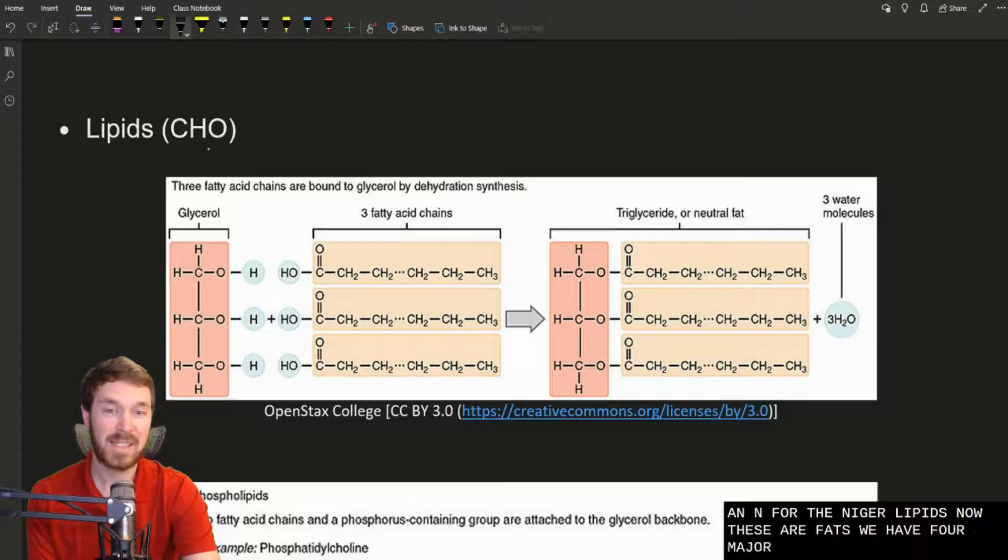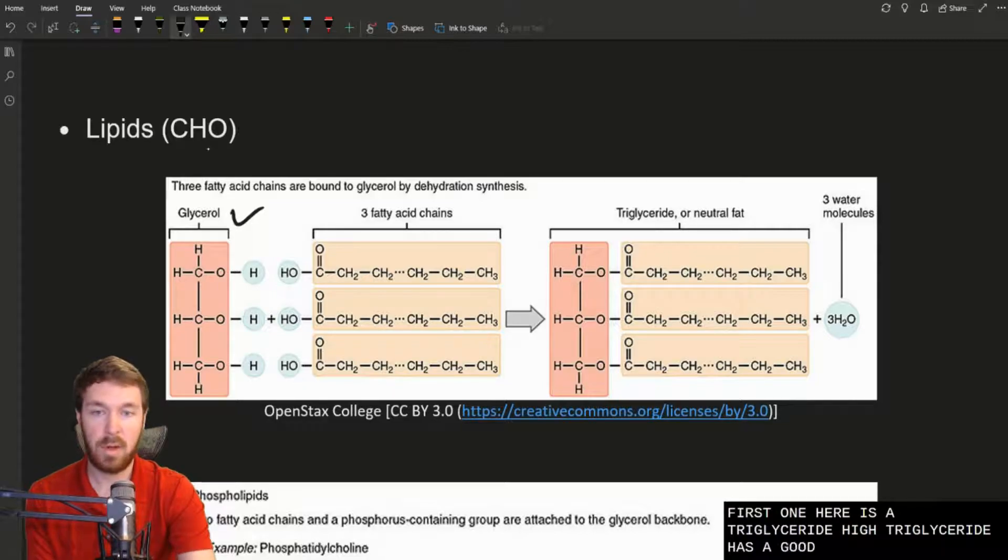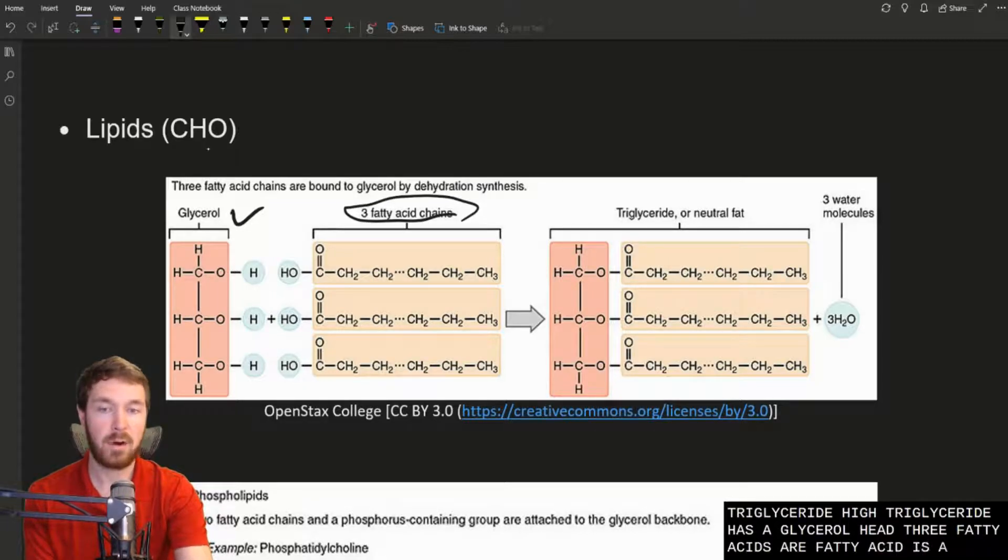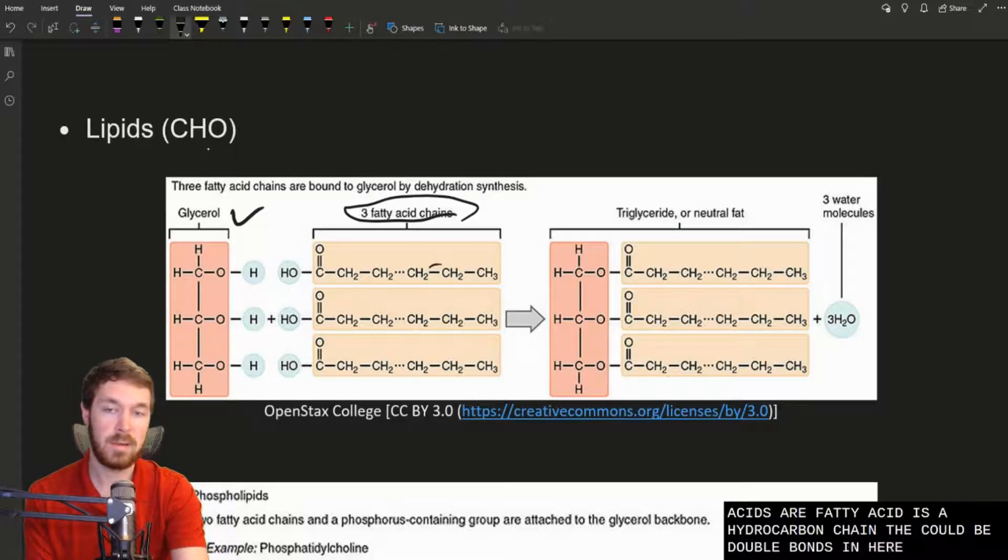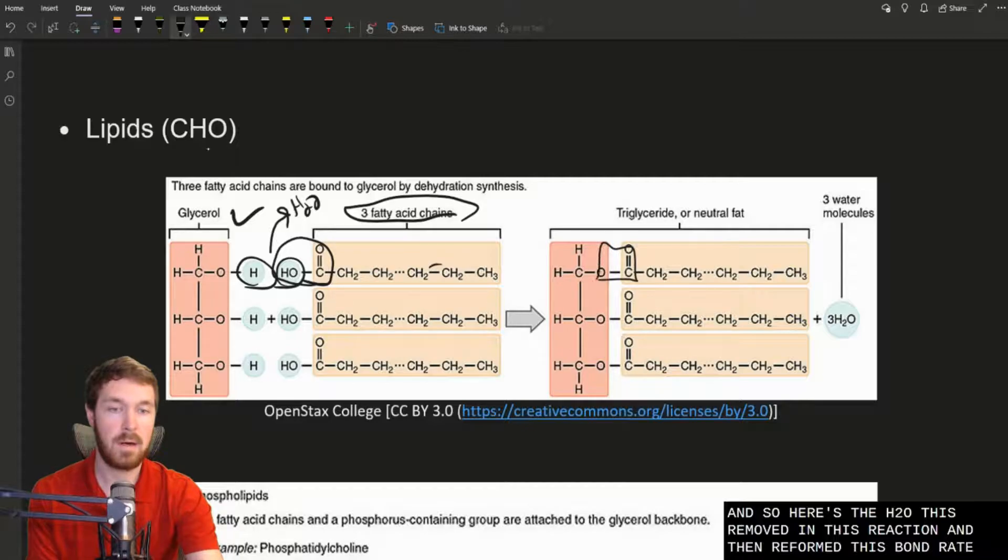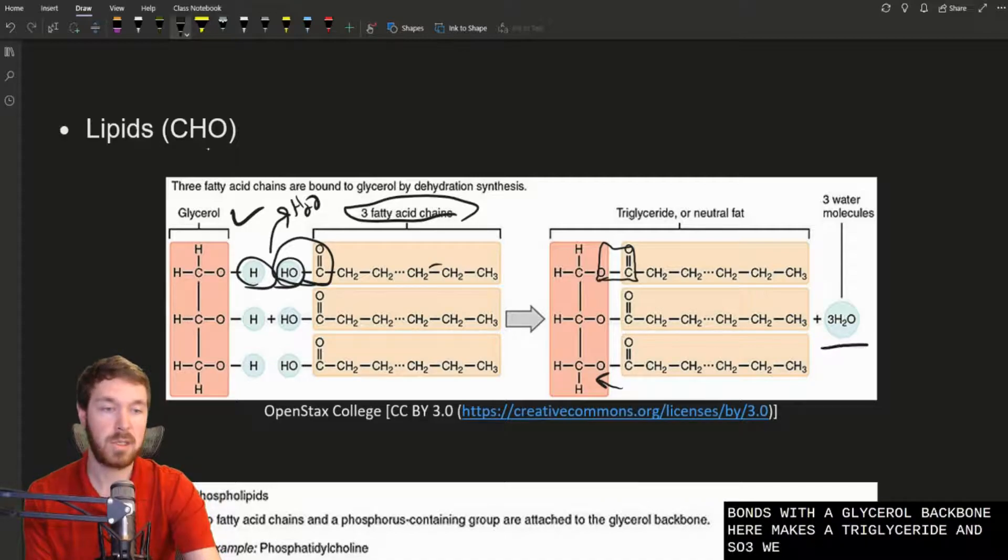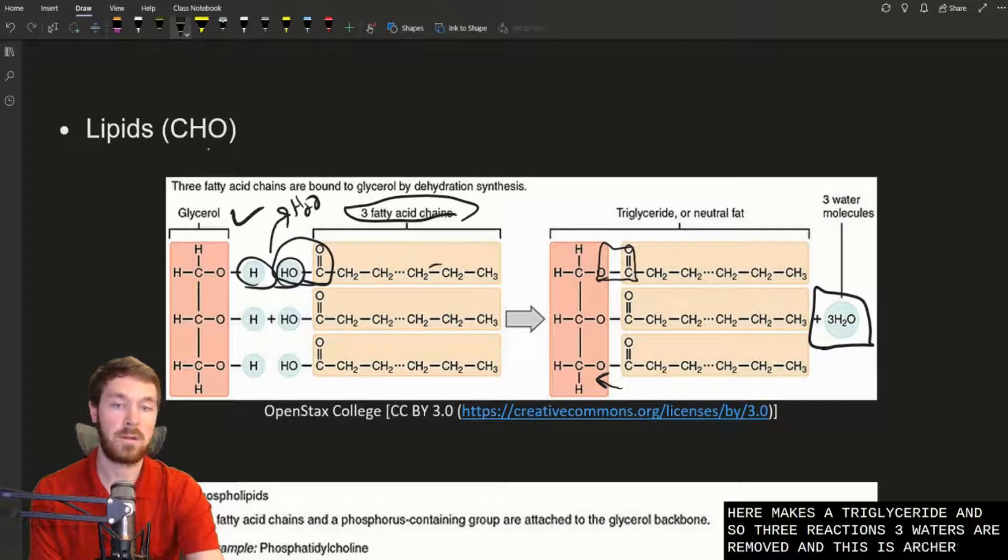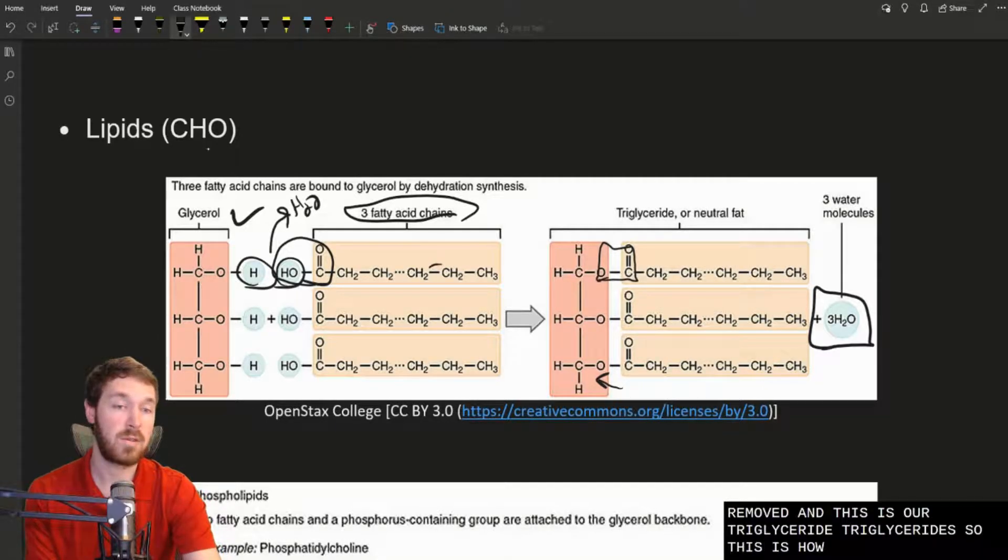Lipids now. These are our fats. We have four major classes of lipids. The first one here is a triglyceride. A triglyceride has a glycerol head, three fatty acids. So a fatty acid is a hydrocarbon chain. There could be double bonds in here. They could be saturated or unsaturated fatty acids. And then there's a carboxylic acid end. Here's the H2O that's removed in this reaction. And then we form this bond right here, which is called an ester bond. Forming three of these bonds with a glycerol backbone here makes a triglyceride. So three reactions, three waters are removed. And this is our triglyceride. This is how we store fat in our body.